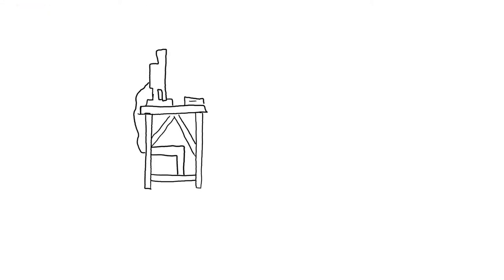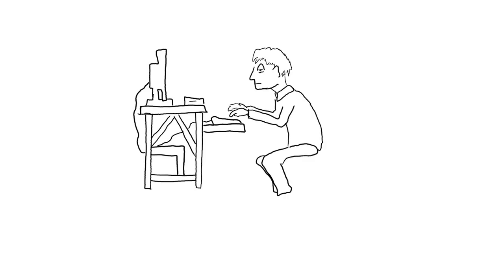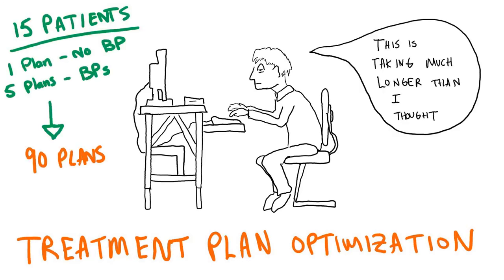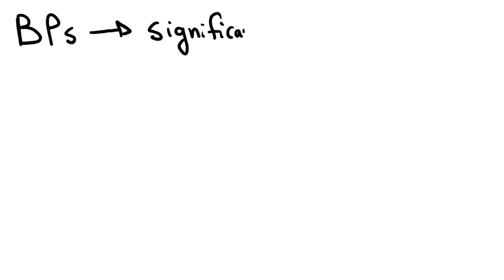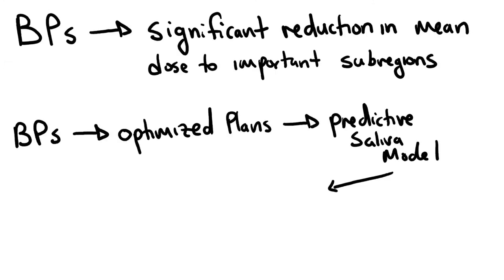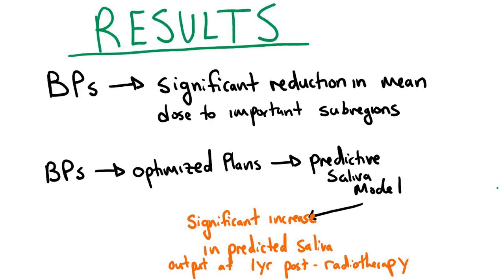Treatment plans for 15 patients were then optimized with five different types of baseplans as well as without baseplans. The resultant subregional parotid gland mean doses were calculated and then run through a predictive model for saliva output loss at one year post radiotherapy. Significant reductions in dose to important subregions of the gland were found, as well as significant improvements in saliva output predictions for patients planned with artificial baseplans.